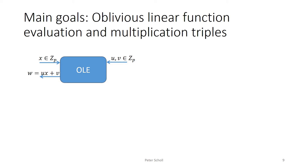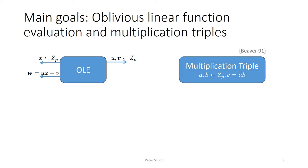OLE is a two-party functionality between a sender and a receiver, where the receiver has input x, the sender has inputs u and v, and the receiver obtains w = ux + v. Since we're constructing a correlation, we consider a random variant where both parties' inputs are sampled uniformly. The related notion of multiplication triples is an n-party correlation which samples random values a, b, and c, where c = a times b, and then distributes to each party an additive sharing of a, b, and c.